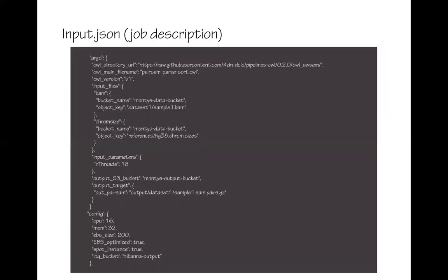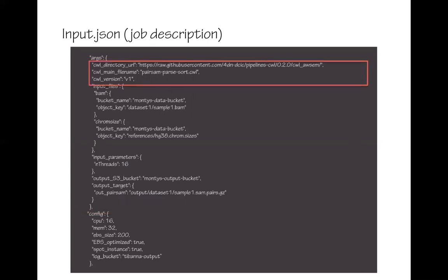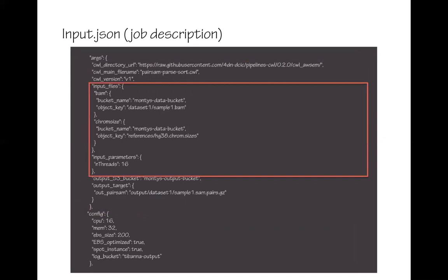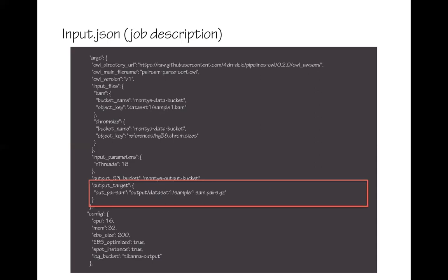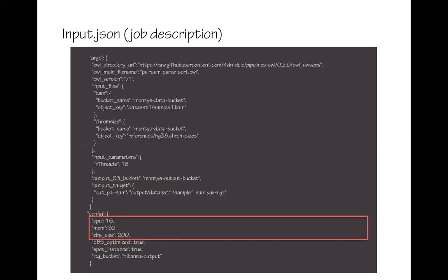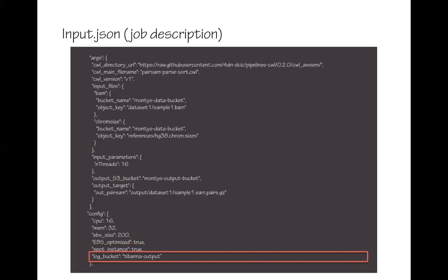Here is what the input JSON looks like. It has two parts: args and config. The args section contains information about the workflow — in this case a CWL workflow — including the location of the CWL workflow file, its version, the S3 bucket and object key for the input files, the input parameters, and where the output should go. The config section lets you specify CPU, memory, EBS size, or alternatively the instance type directly, whether to use spot instances, and which S3 bucket to store your logs. There are many other options; check the documentation for more details.